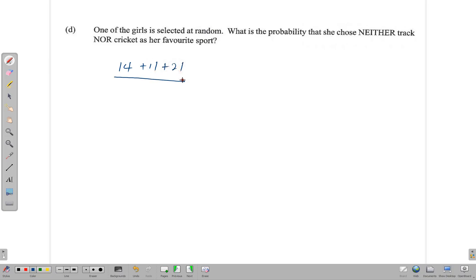So we have 14 plus 11 plus 21, and there are 75 girls in total, so the probability is going to be 46 over 75. And that's our answer right there. Usually you simplify your probabilities, but here we have an even and odd number, so these are not going to simplify. This is our answer - the probability that a girl chosen at random chose neither track nor cricket as her favorite sport.